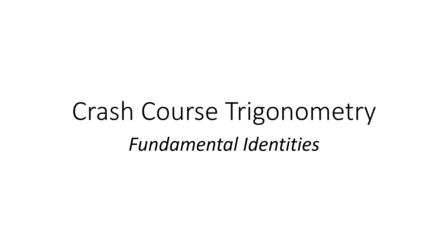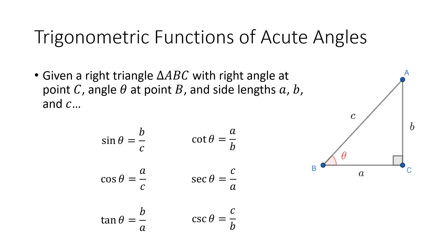In this video in our Crash Course Trigonometry series, we're going to talk about fundamental identities, which are relationships between the six trigonometric functions that we talked about in the previous video. So here's a review of that video. When we have a right triangle with a 90-degree angle and an acute angle measuring theta,